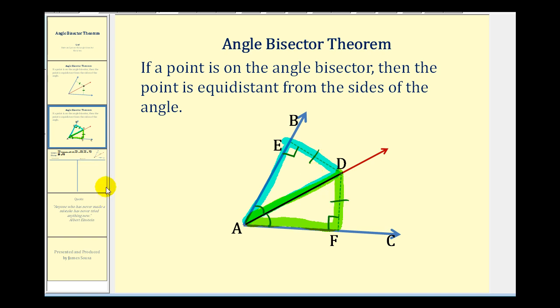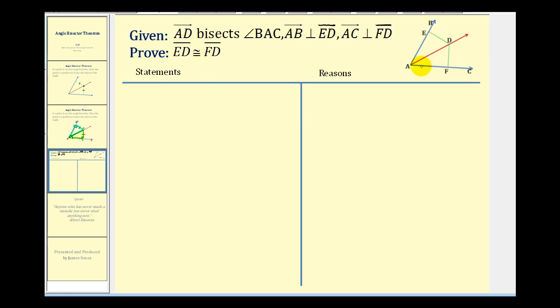Let's write this out in a two-column proof. We are given that ray AD bisects angle BAC, that ray AB is perpendicular to segment ED, and that ray AC is perpendicular to segment FD. As we normally do, we'll start by stating the given.